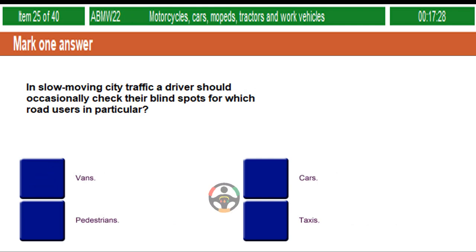In slow moving city traffic, a driver should occasionally check their blind spots for which road users in particular? Vans, cars, pedestrians, taxis.